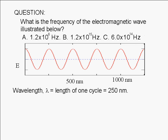Wavelength, which is usually represented by the Greek letter λ, is the length of one cycle and is also the distance traveled by the wave in one cycle.